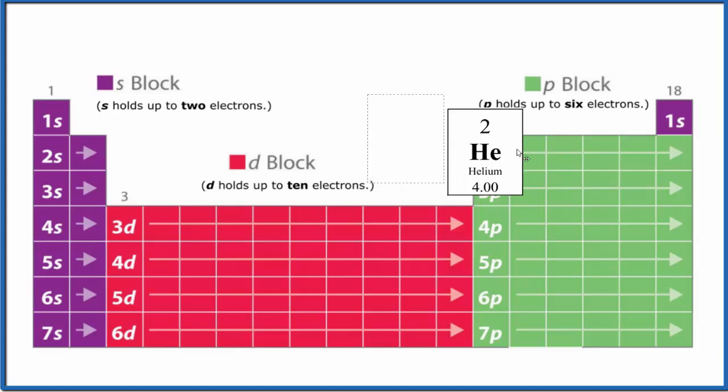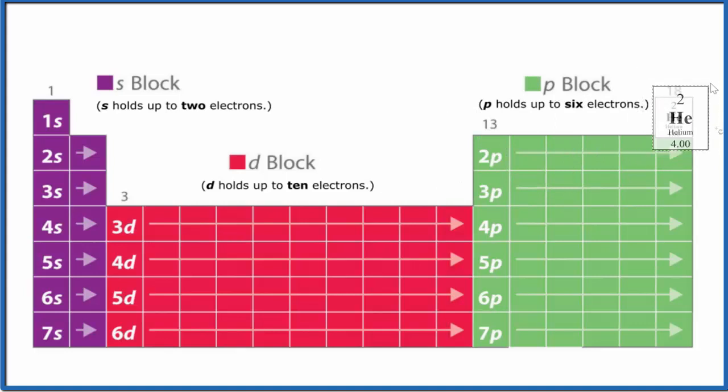Helium is right here on the periodic table. So to write the electron configuration, we start off in the first energy level. We have 1s1, and then helium is 1s2, and that's it, that's the electron configuration.